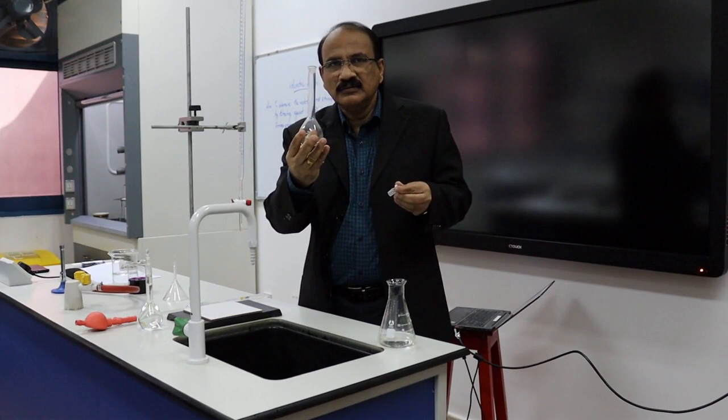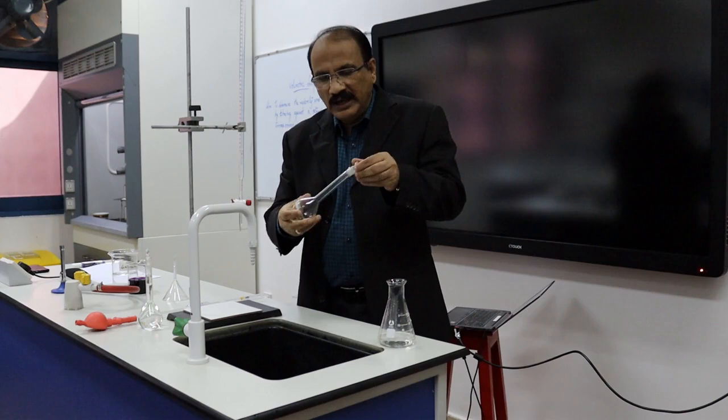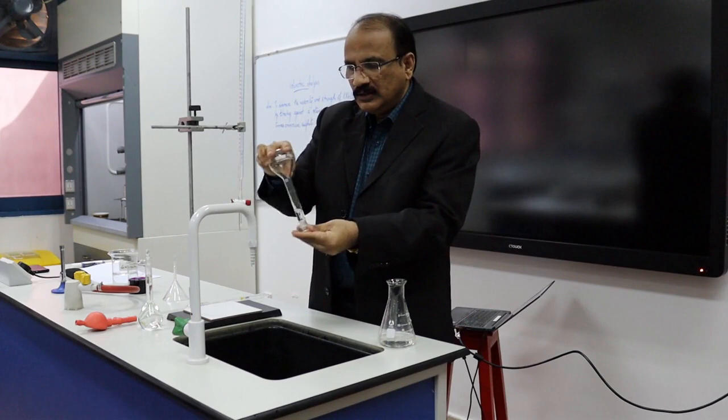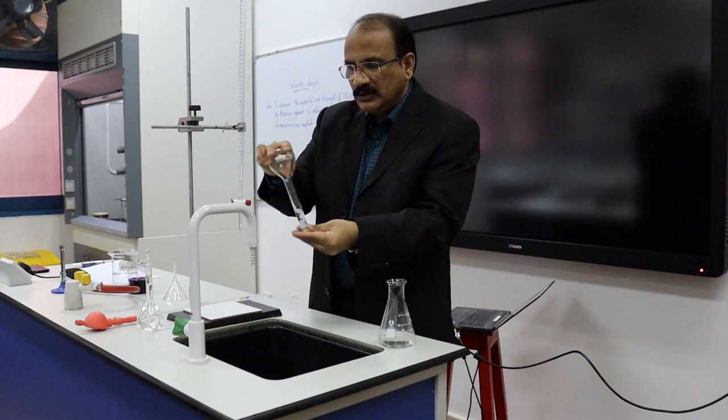The third apparatus needed is a standard flask. The capacity of this standard flask is 100 ml. This should be washed — collect water and wash the standard flask. We also need a small funnel, and that funnel should also be washed.